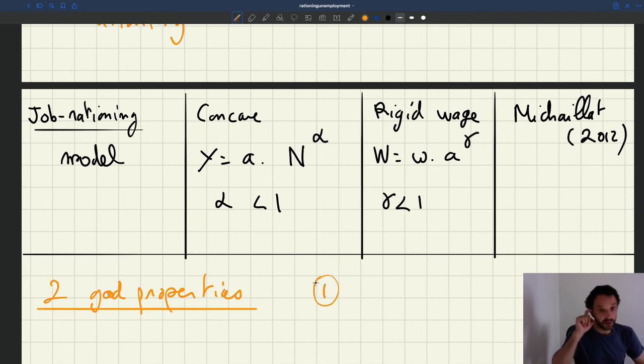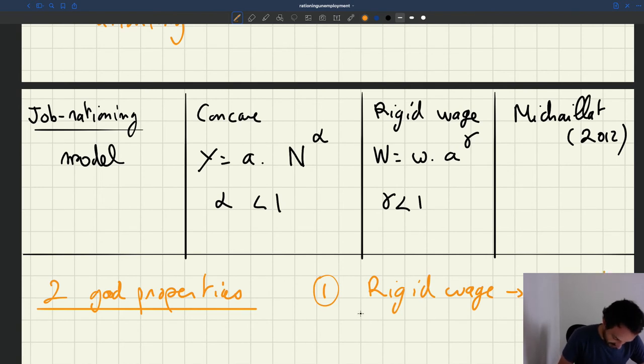One, and that's for the reason that Bob Hall highlighted in a 2005 article, because we have a rigid wage, we're going to have realistic fluctuations in unemployment.